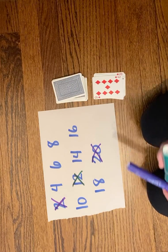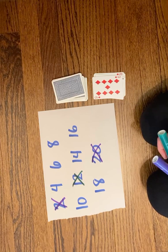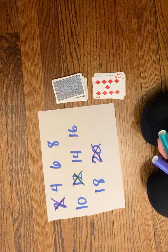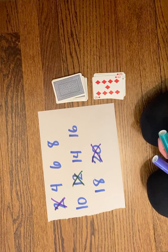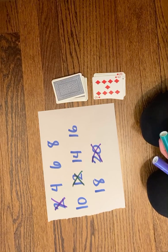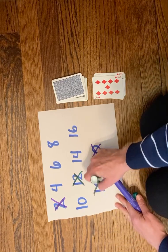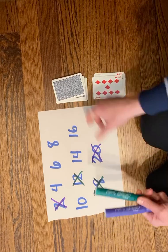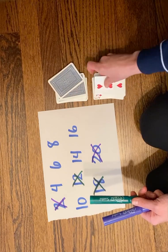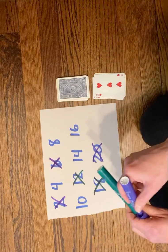Nine times two is eighteen. If I'm having a hard time thinking about my doubles because I don't know them by memory yet, I can think about nine plus nine. I know nine plus nine is eighteen, so green gets to take eighteen. Purple's turn again. Three times two is six. Purple gets to take the six.